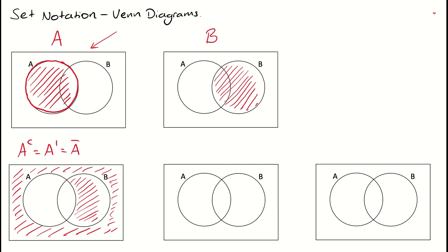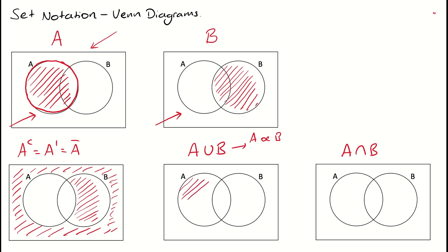Now remember we've also got the union, A union B. The union is talking about A or B occurring, so we're kind of mushing the A and B Venn diagrams together. If you have a look at our A Venn diagram and our B Venn diagram, anything that's shaded between the two — we mush them together and make one Venn diagram. So we shade in all of the space from A and then the bit that B is contributing, and that would be our union, that's A or B.